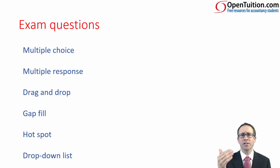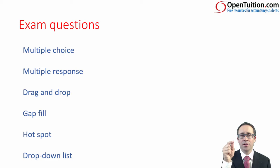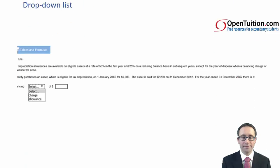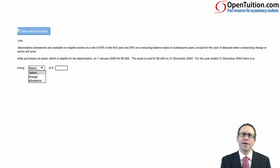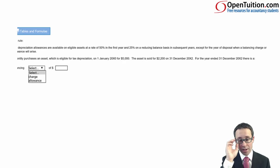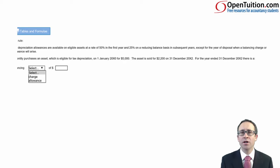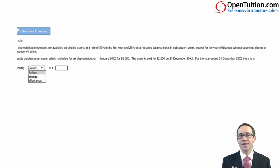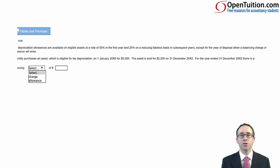And then you've got a drop-down list. With a drop-down list you have a series of options and you just click on the list and drop down to the correct answer. This is an F1 question to do with tax — you need to select either a balancing charge or a balancing allowance, and as well as putting in a number on the right-hand side, on the left-hand side you need to drop down to the correct answer. You need both right to get full marks.